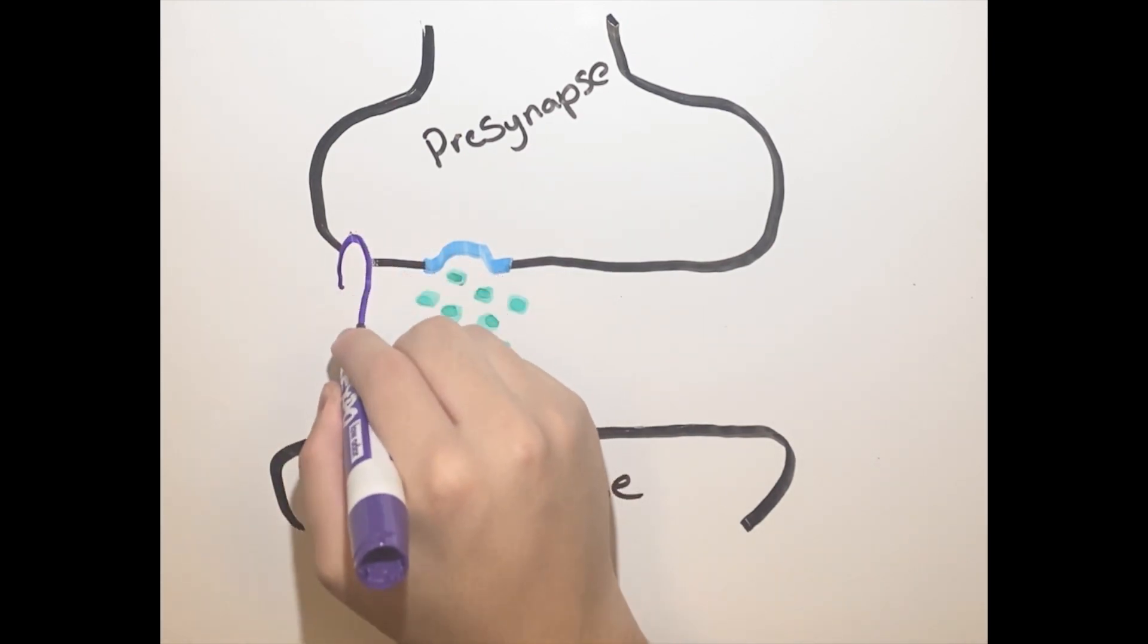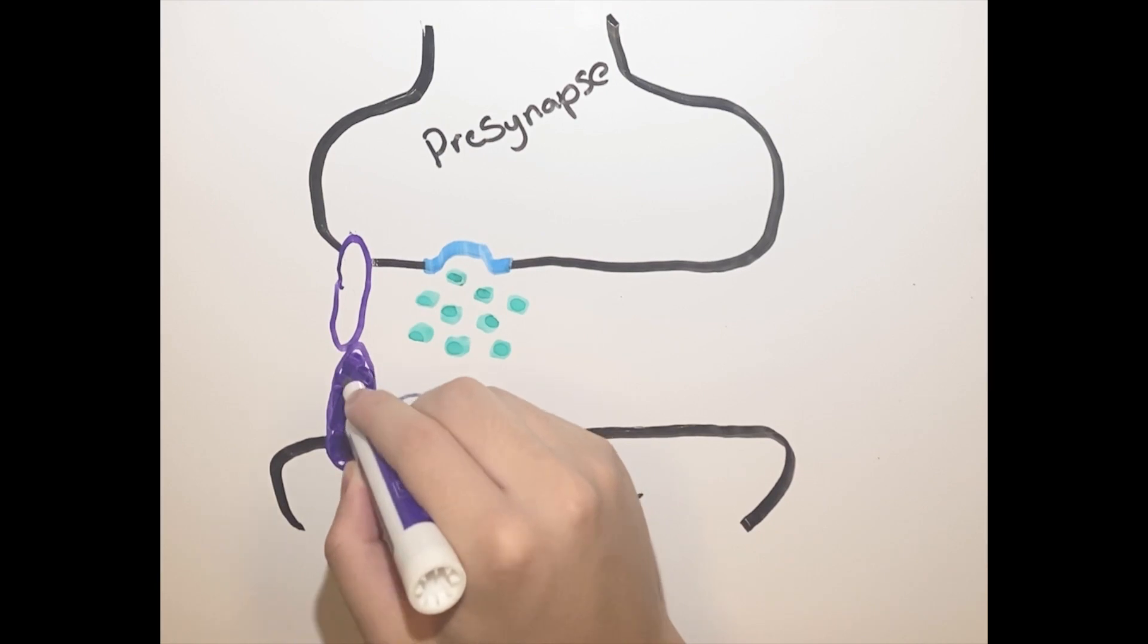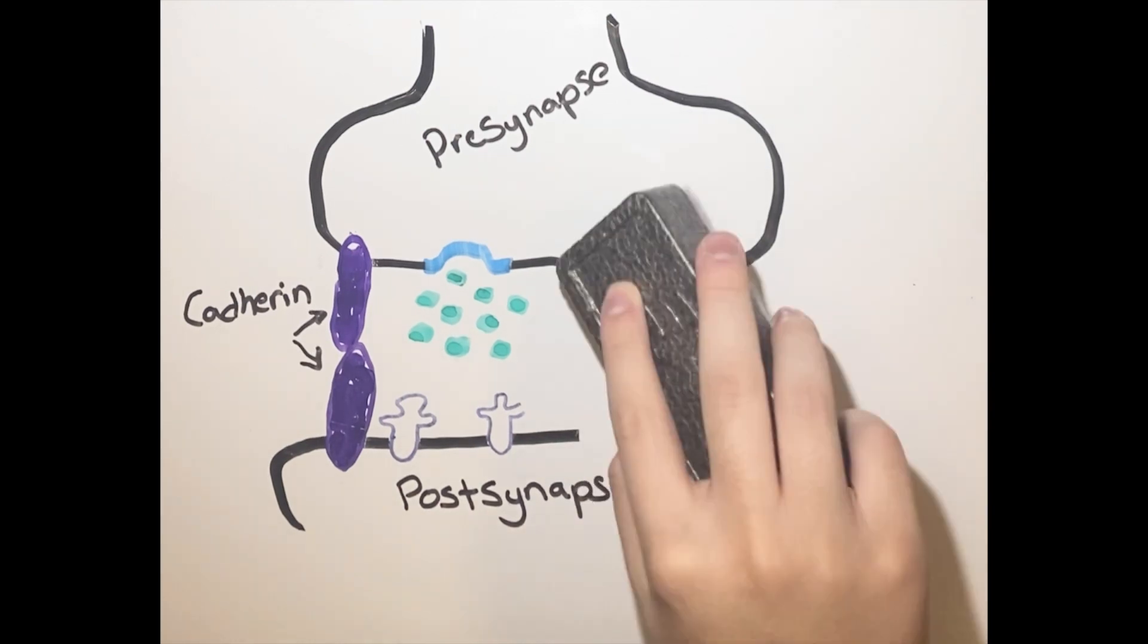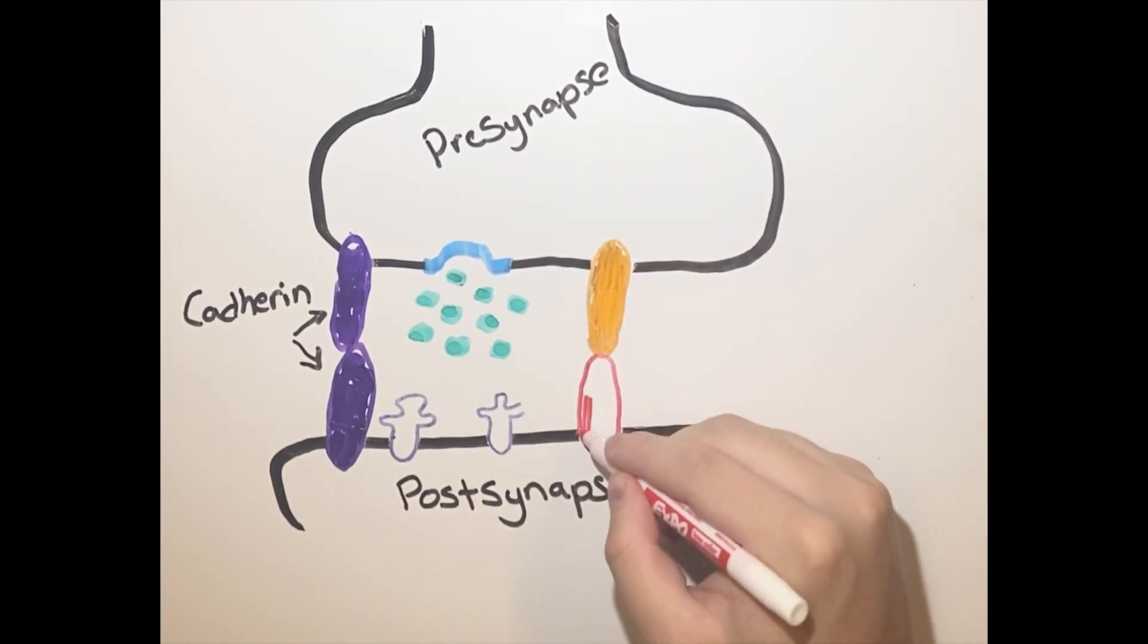There are proteins on both the synaptic surfaces that make sure that the two membranes are always extremely close to one another, so the neurotransmitter remains in the synaptic cleft. Cadherin is one of these proteins in this process and it's on both the pre- and post-membranes and it's used to keep them connected.